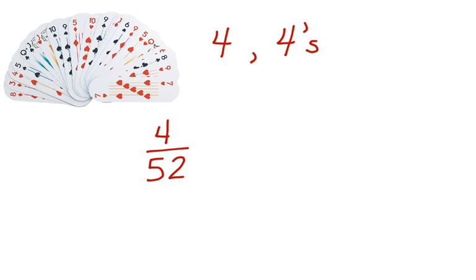Now, again, when we do the probability of compound events, we're going to multiply. The next chance that there'll be a 4 will be 3, because remember, one of the cards was already taken out, out of 51.